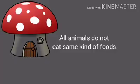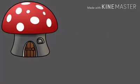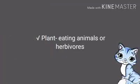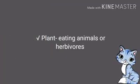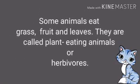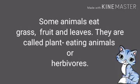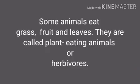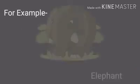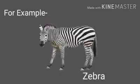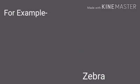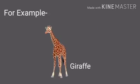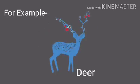All animals do not eat the same kind of foods. Some animals eat grass, fruit, and leaves — they are called plant-eating animals or herbivores. For example: elephant, zebra, giraffe, and deer.